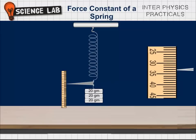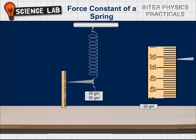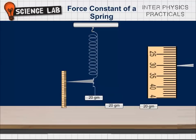8. Now remove one slotted weight. The pointer tip moves up. Repeat step 6. Record the reading in unloading column. 9. Repeat step 8 till only hanger is left.